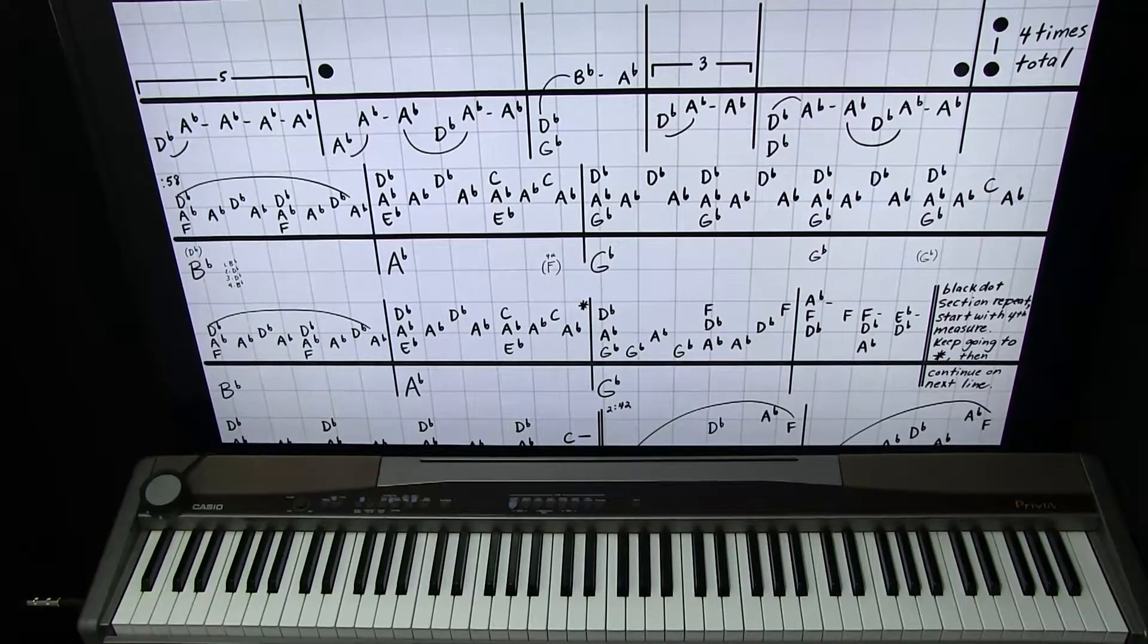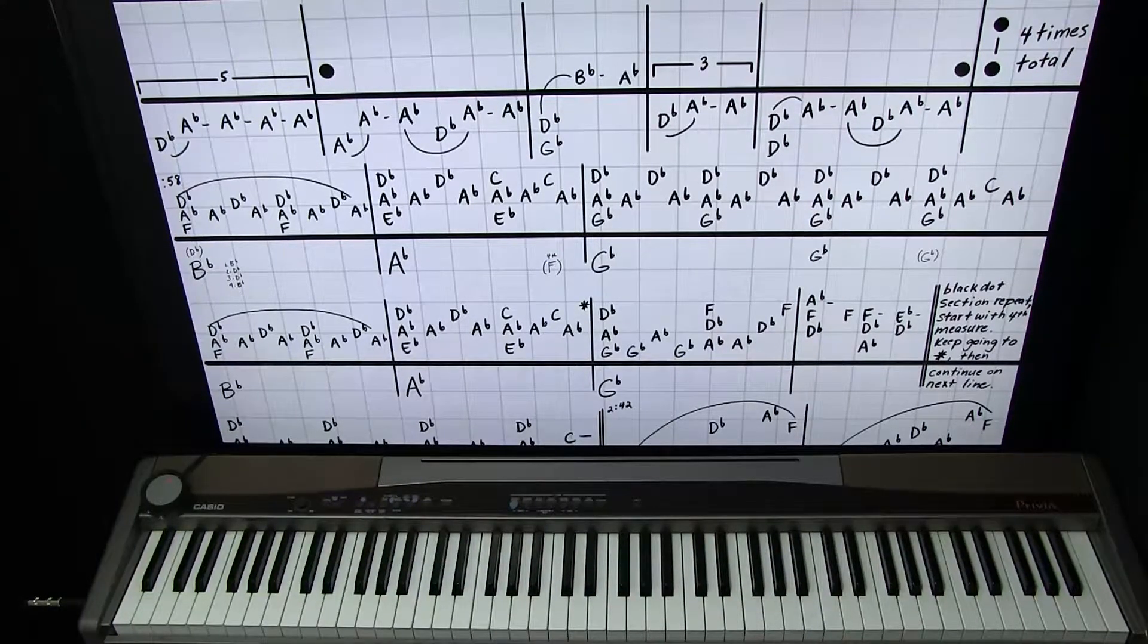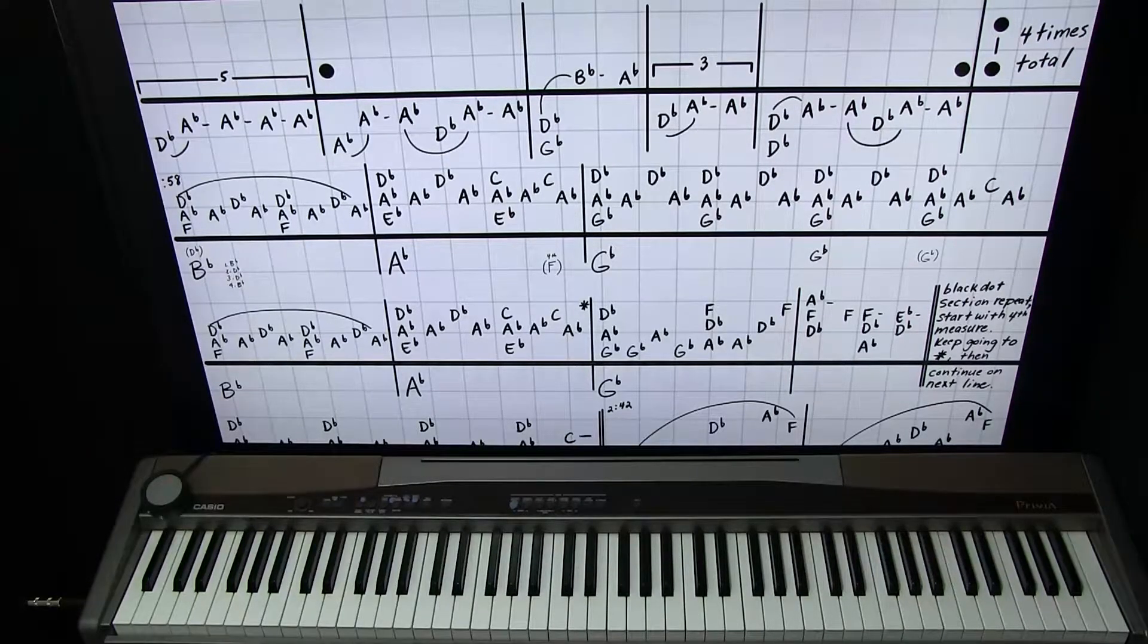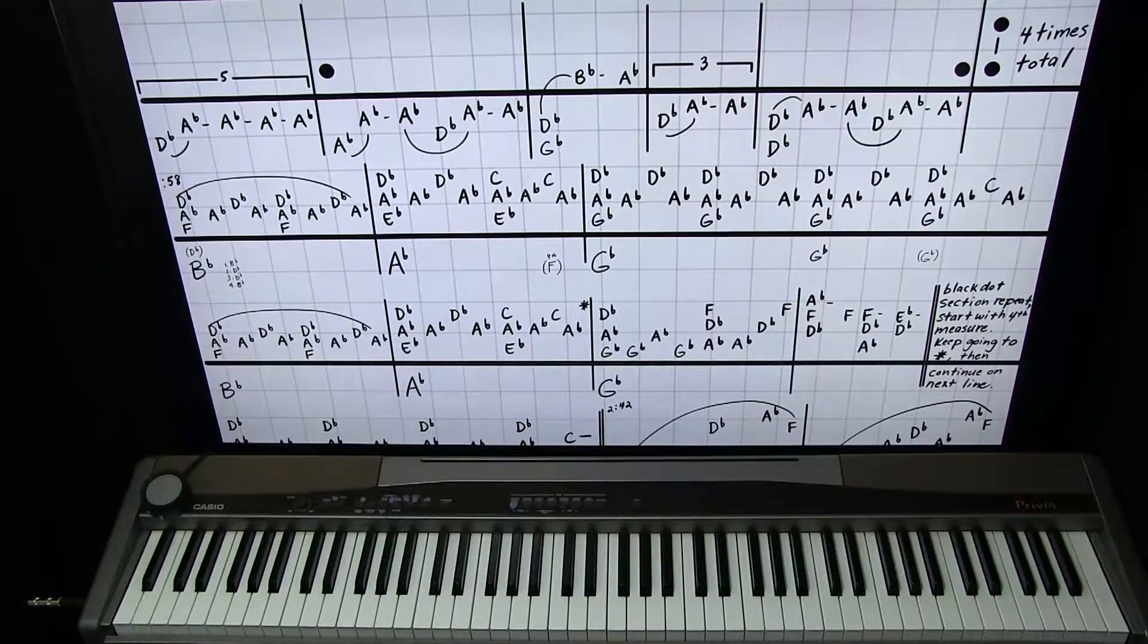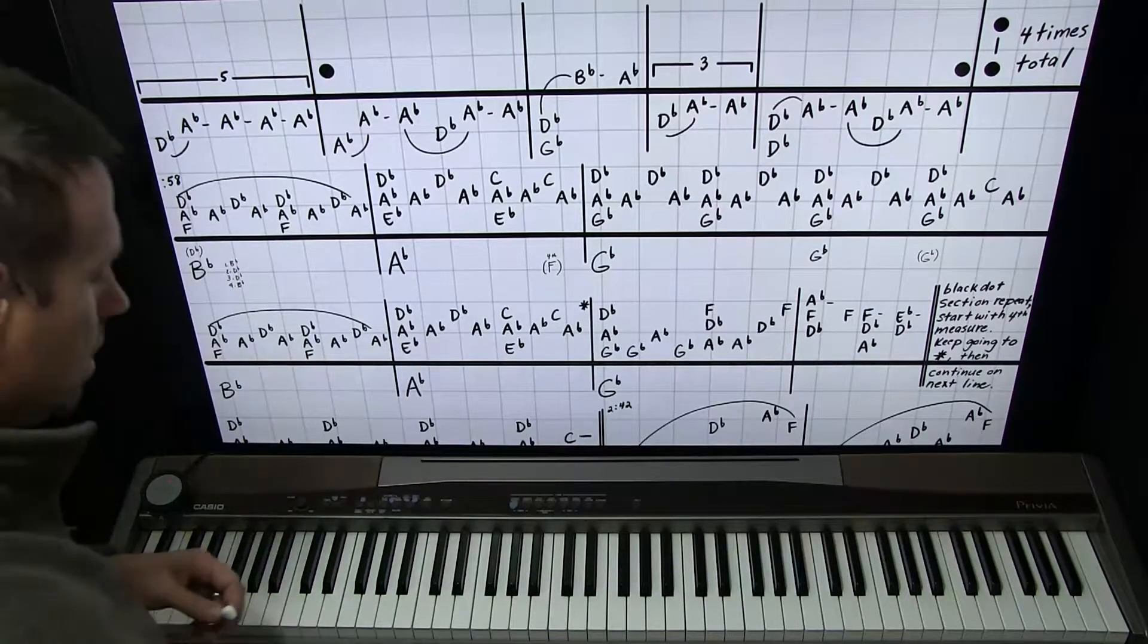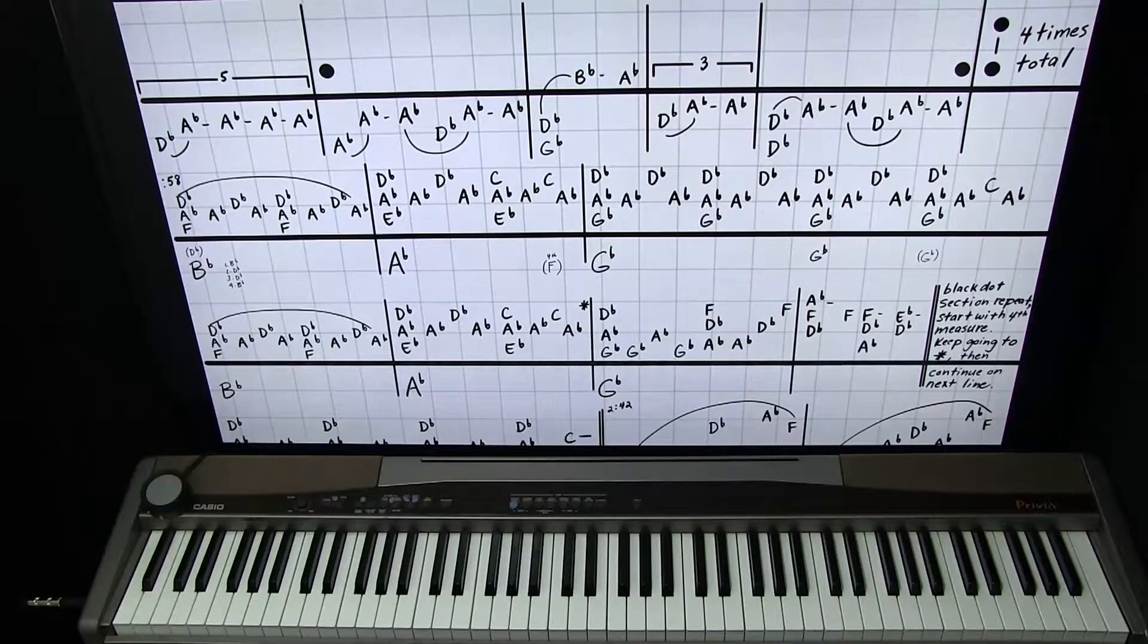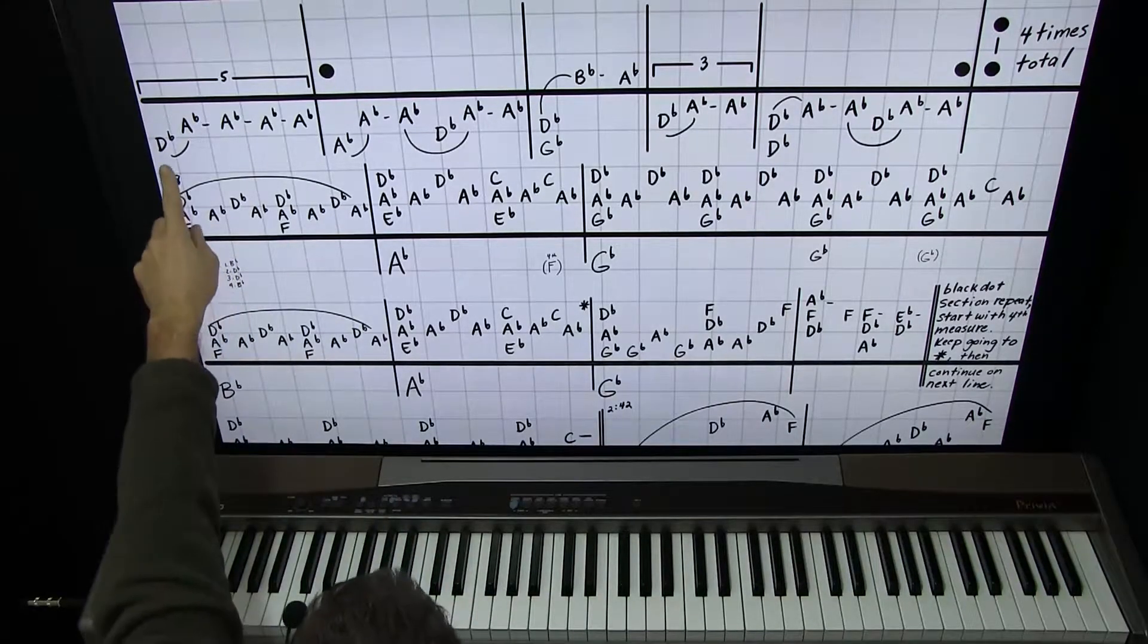All right guys. This is Hired Request number 72 on the current list. It's Dancing on My Own by Callum Scott. It's just a piano solo arrangement here, and I'm going to do the part one. Sounds like this.